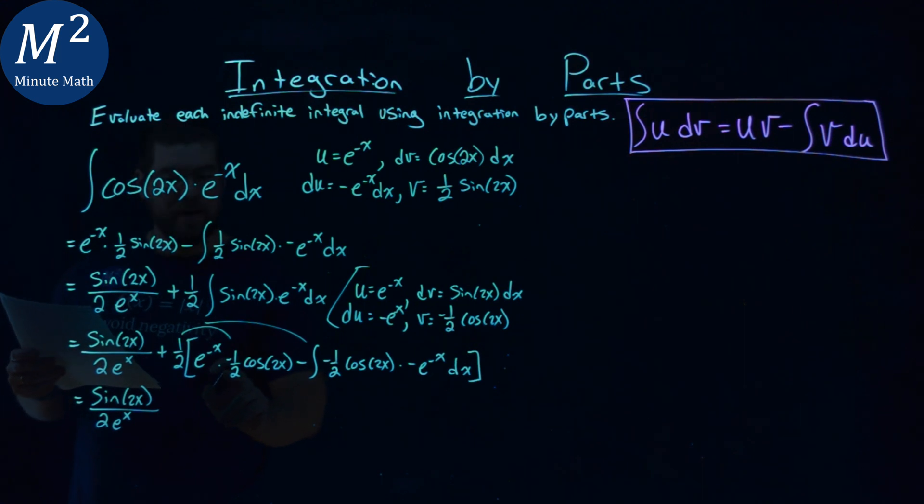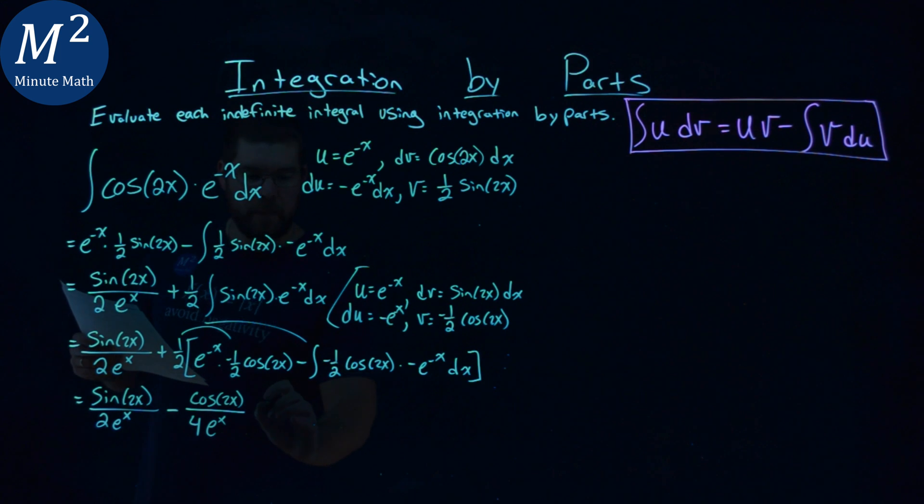So distributing that across to both parts here. What do we have? One-half times negative one-half is negative one-fourth. So we have a minus sign. We have 4 in the denominator. Then we have a cosine of 2x in the numerator. And we're bringing that e to the negative x down in the denominator, the e to the positive x power.